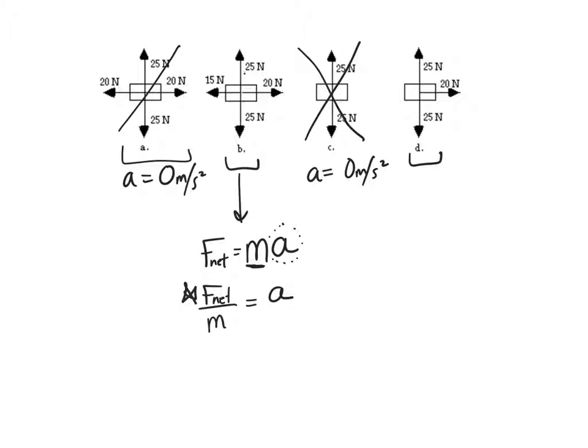This guy, the up and down forces cancel. We have 20 forward and 15 back. So the net force, which we can also write this way, is going to be equal to 20 minus 15. So our net force is 5 newtons, and that was for B.